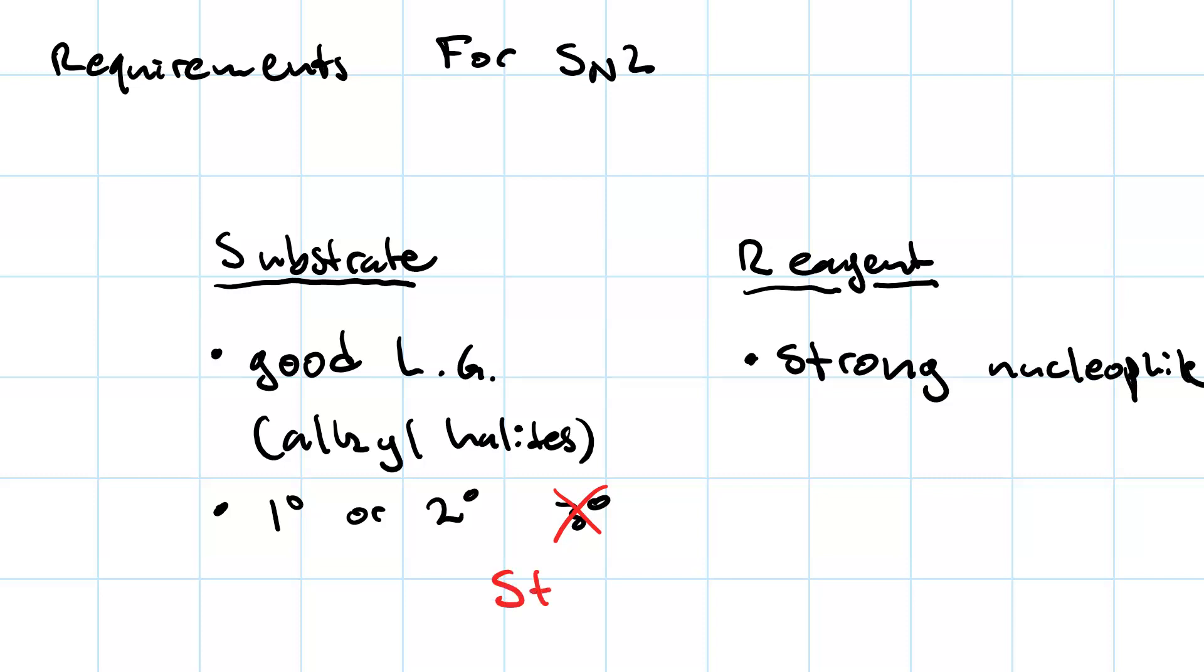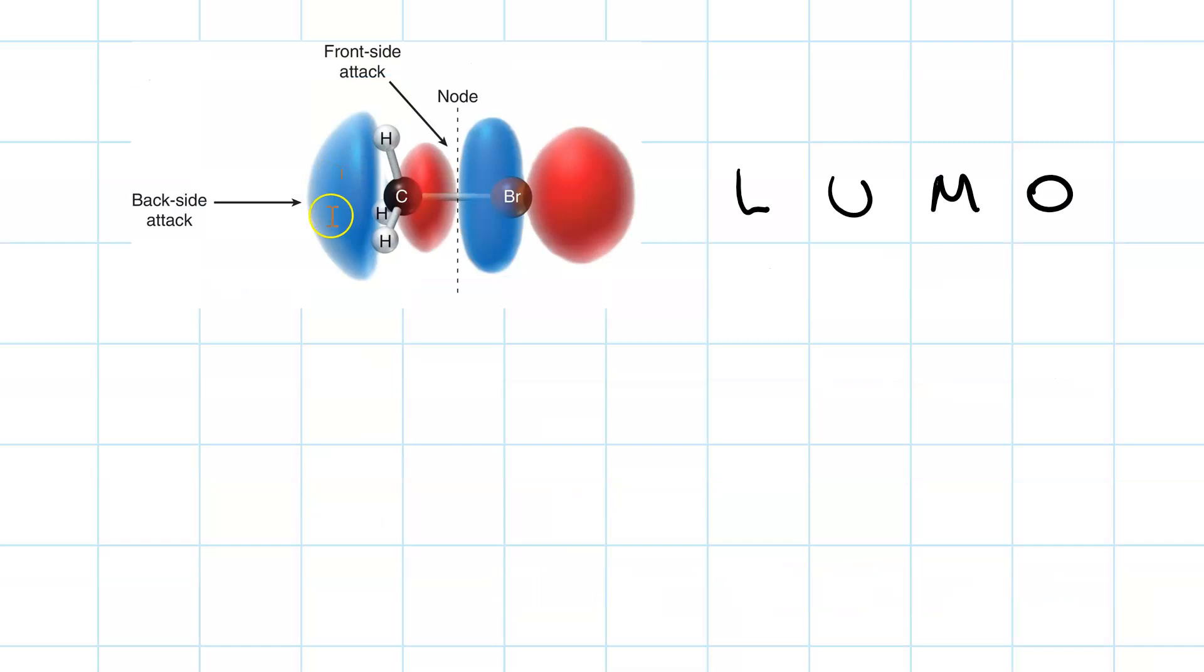Let's talk about the sterics and why tertiary doesn't work. This is related to why we get inversion of configuration. R goes to S and S goes to R, for instance. These balloon animals here represent the lowest unoccupied molecular orbital of an alkyl halide. This means there's no electron density in this orbital. This is the acceptor orbital, where the nucleophile is going to put its electrons, somewhere into one of these balloons.